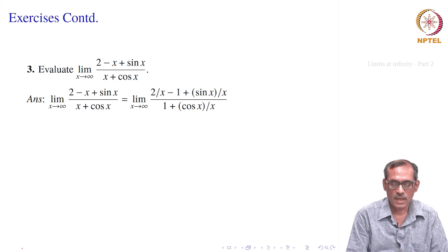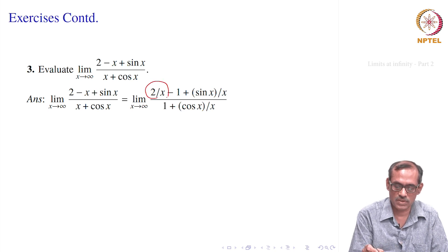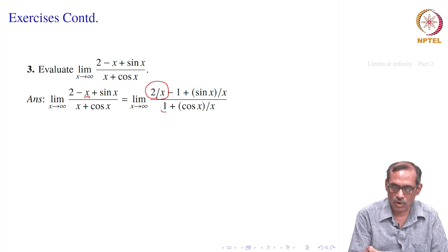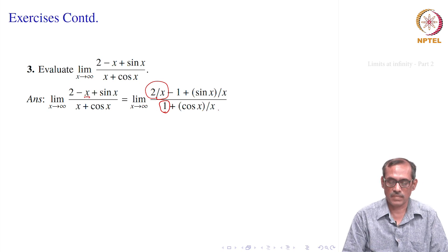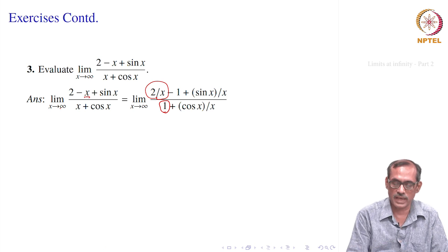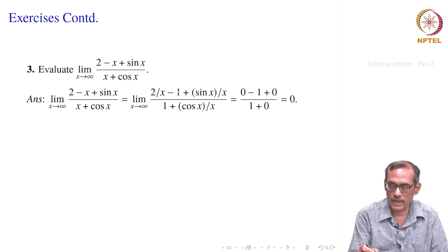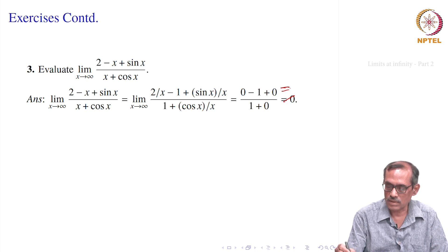Let us see how to proceed. We use the known results that sin(x)/x and cos(x)/x go to 0 as x goes to infinity. So we divide by x: the numerator becomes 2/x minus 1 plus sin(x)/x, and the denominator becomes 1 plus cos(x)/x. All of 2/x, sin(x)/x, and cos(x)/x go to 0, so all that remains is minus 1 over 1, giving minus 1.